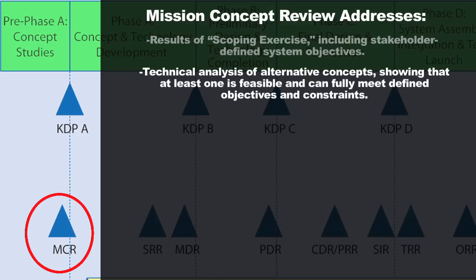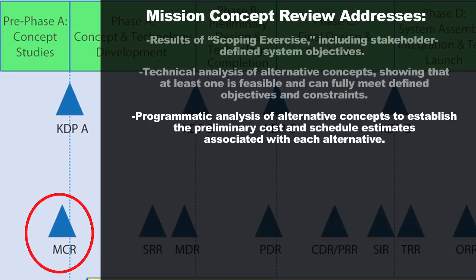You're also going to review the technical analysis of all alternate concepts that can either fully or partially meet those objectives. The review team will want to see that at least one concept is fully capable of meeting the defined objectives within all constraints — budgetary and schedule. The review team also performs a programmatic analysis of alternative concepts to establish that at least one can be executed both technically and from a cost and schedule standpoint.